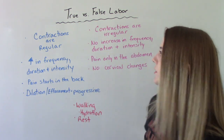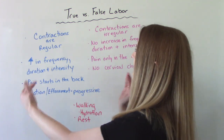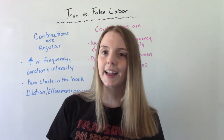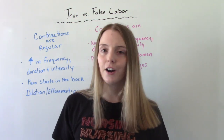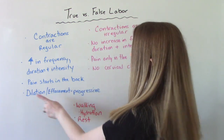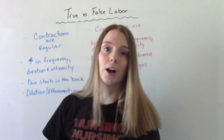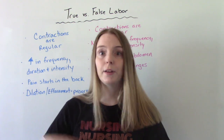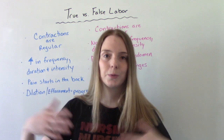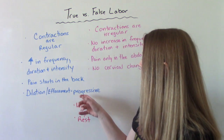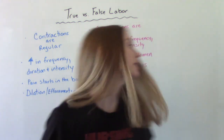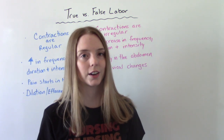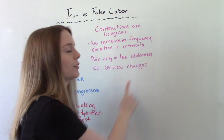Dilation and effacement are progressive — this is really the hallmark sign of real labor. Because you can have all the contractions you want, but if they're not causing you to dilate or efface (which is the thinning of the cervix), then you're not in real labor. Dilation goes from zero to 10 centimeters, and effacement goes from thick to 30%, 50%, and then 100% effaced when you're ready to deliver. In false labor, no cervical changes are occurring.